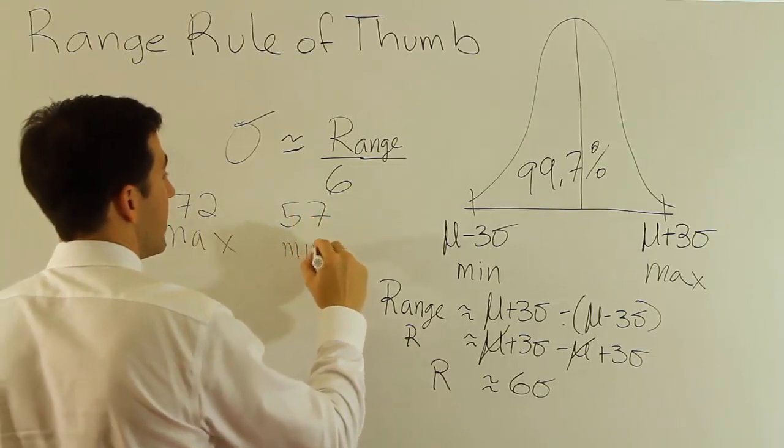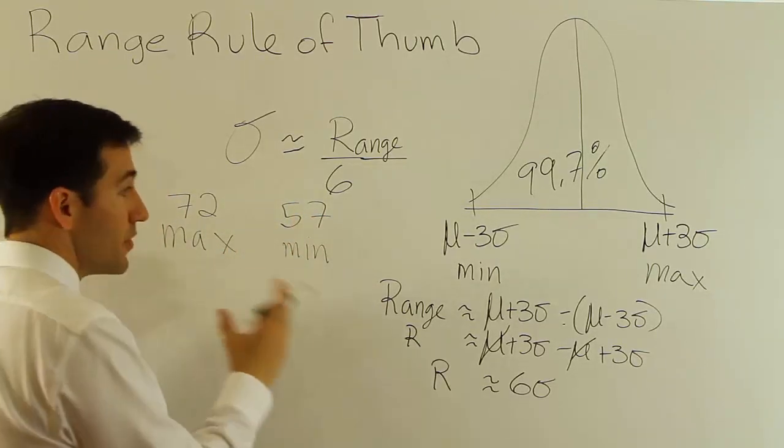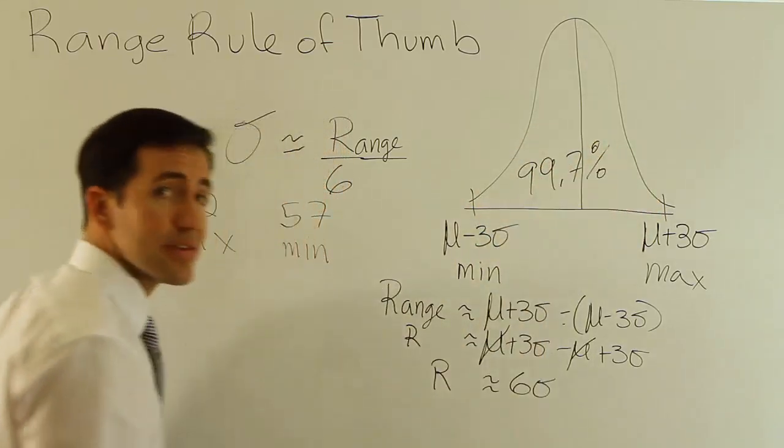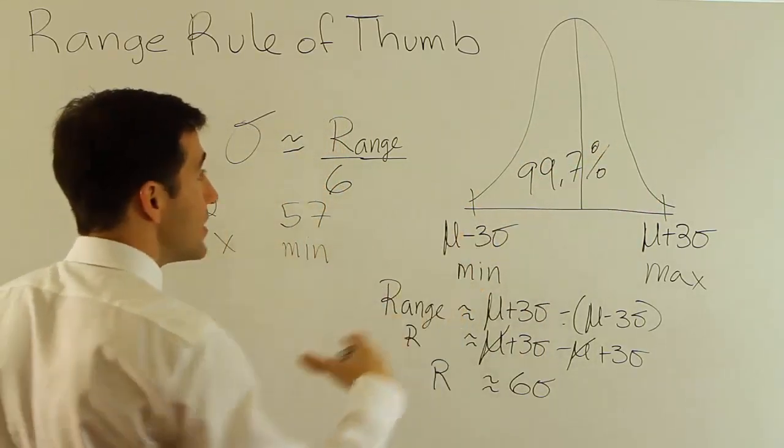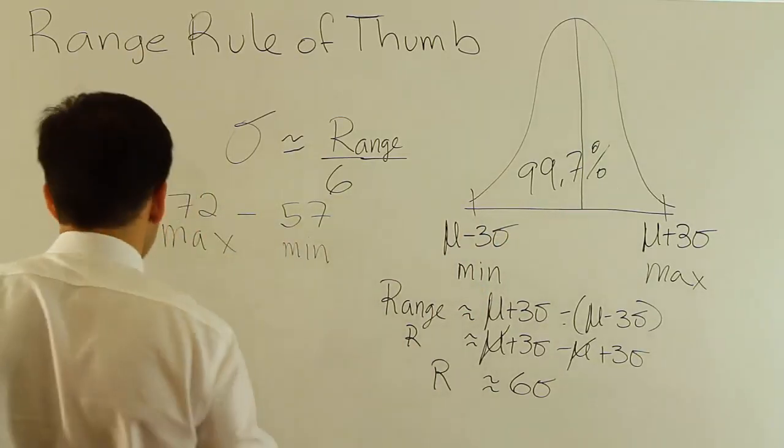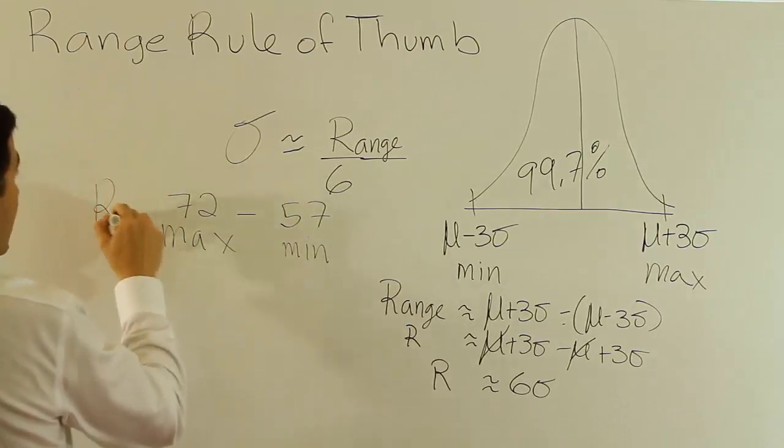So this is a span of six foot to four foot nine. I would say that that's probably pretty close to 99.7% of women. Maybe it's not quite that much, but it's got to be pretty close to it. I'm going to subtract them, and that's going to give me a range.